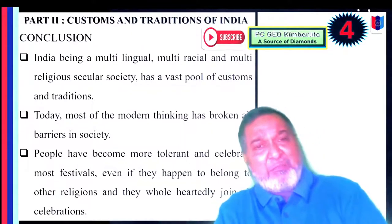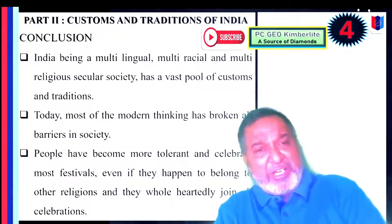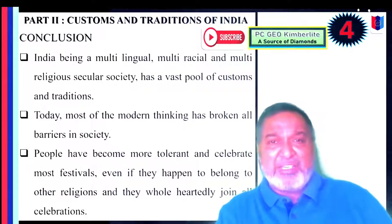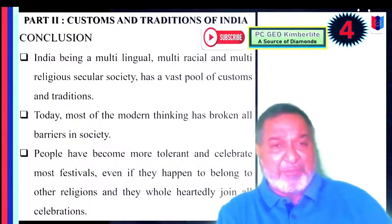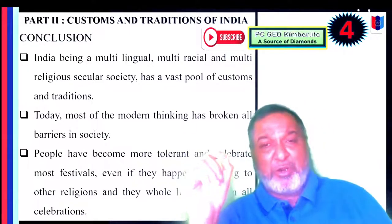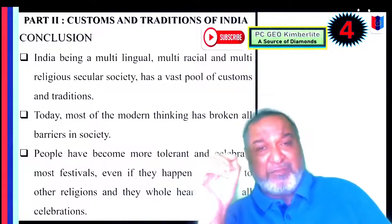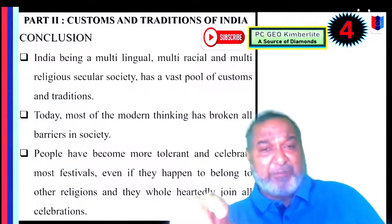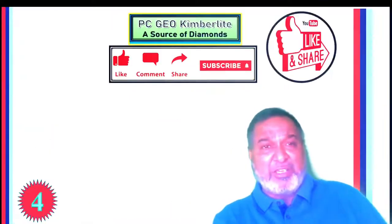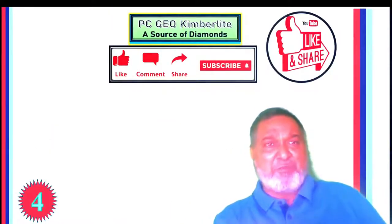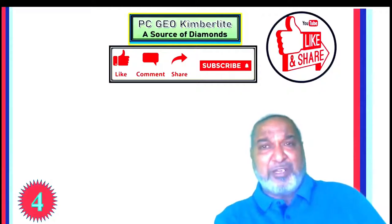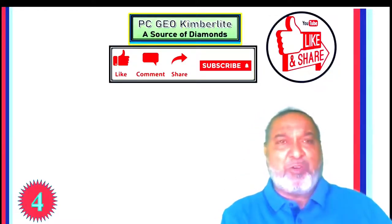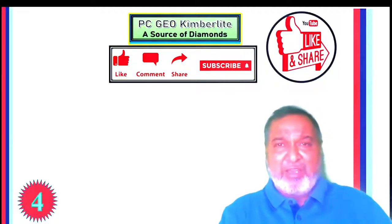In conclusion, India being a multilingual, multiracial, multireligious secular society has a vast pool of customs and traditions. Today, most of our modern thinking has broken all barriers in society. People have become more tolerant and celebrate festivals even if they belong to other religions, wholeheartedly joining all celebrations in India. This completes the first part of the National Integration topic 1. This is the fourth episode of our NCC syllabus. Thank you, have a nice day.